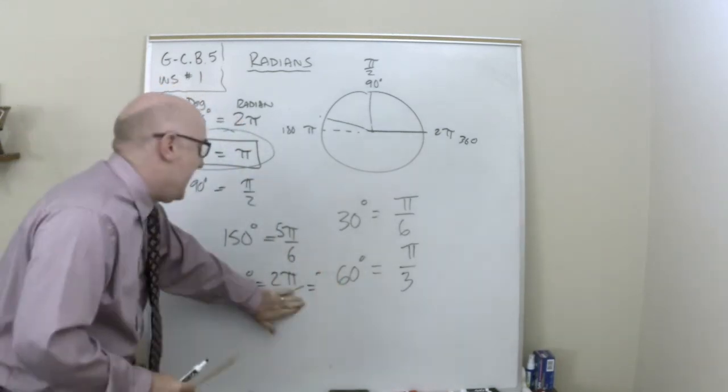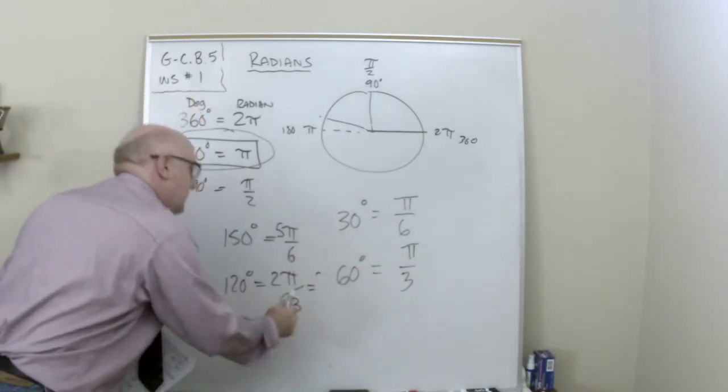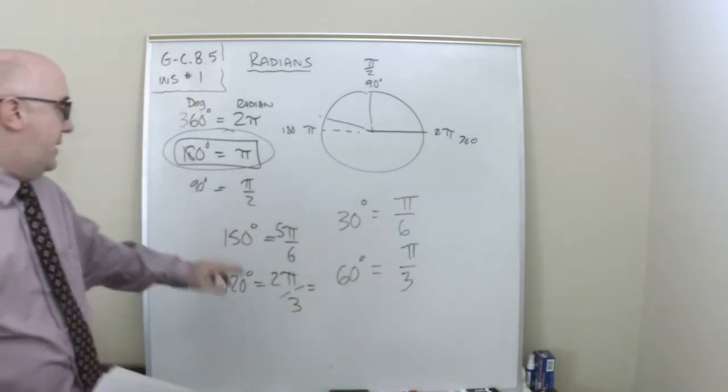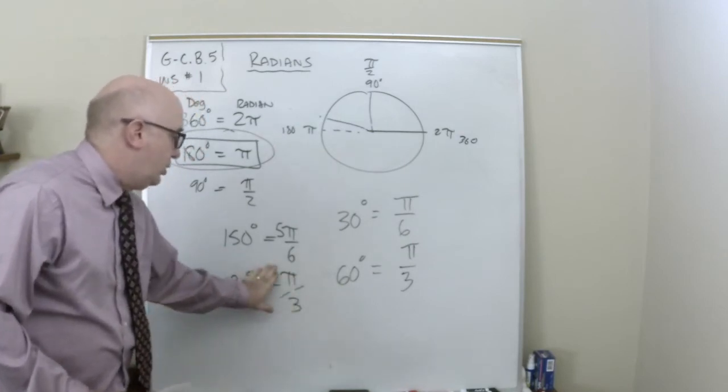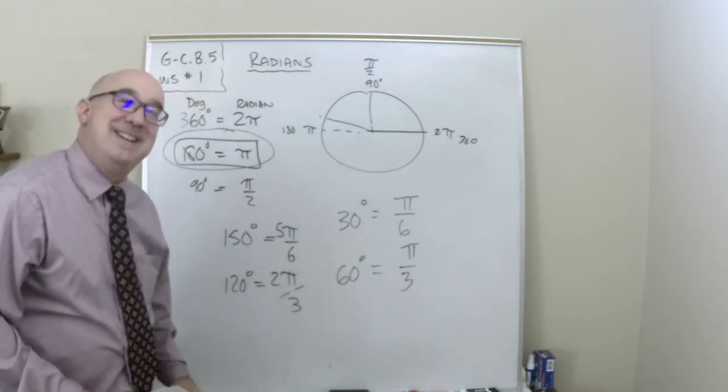Two groups of pi over 3, Michael. Sorry. There. That's better. I was like, wait a minute. Two groups of 60. That's what I wanted. 120.